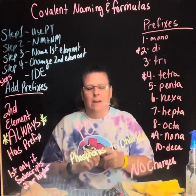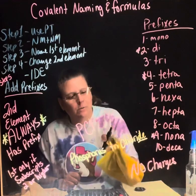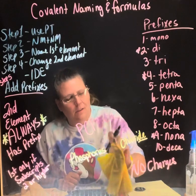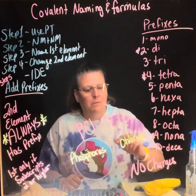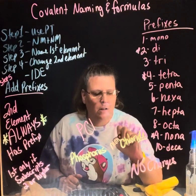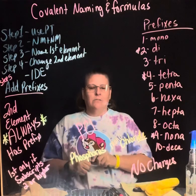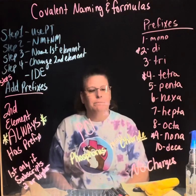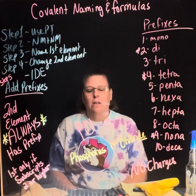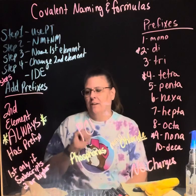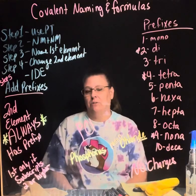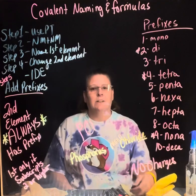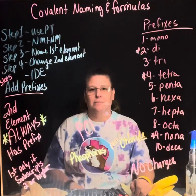But what if the first element had a subscript of one — like PCl? Then the first element does get a prefix, and it would be monochloride, making it phosphorus monochloride. The rule is: the second element always gets a prefix; the first element only gets a prefix if its subscript is two or higher. Bring your periodic table to class.